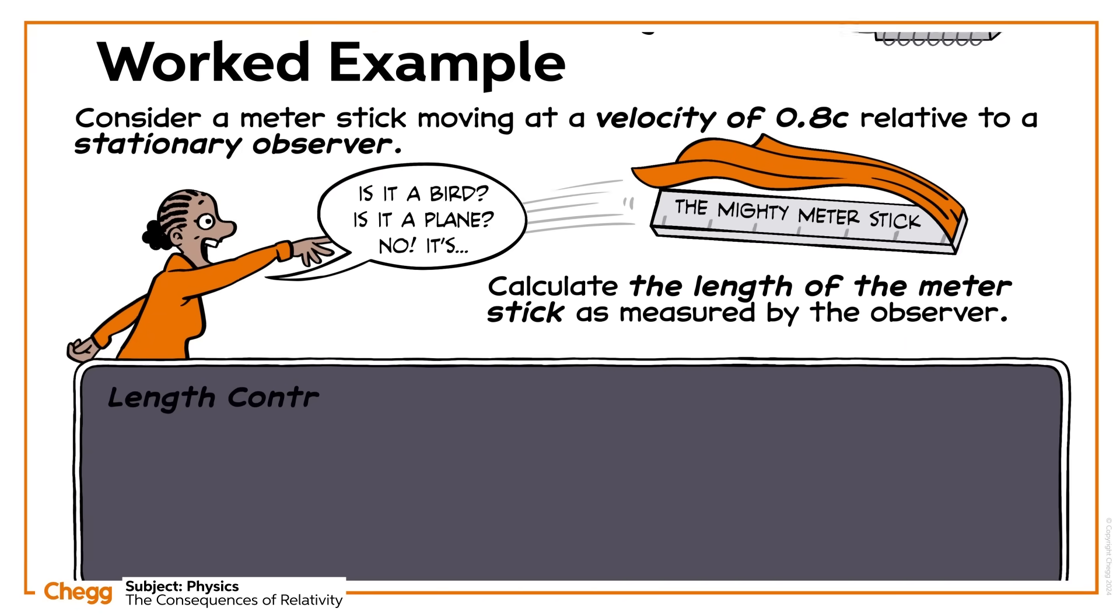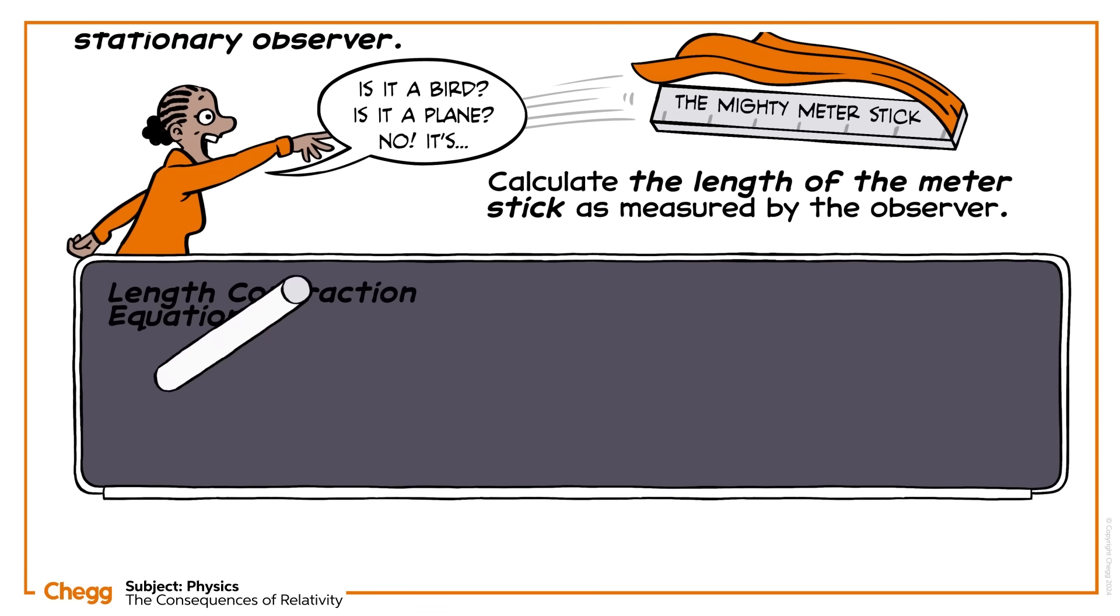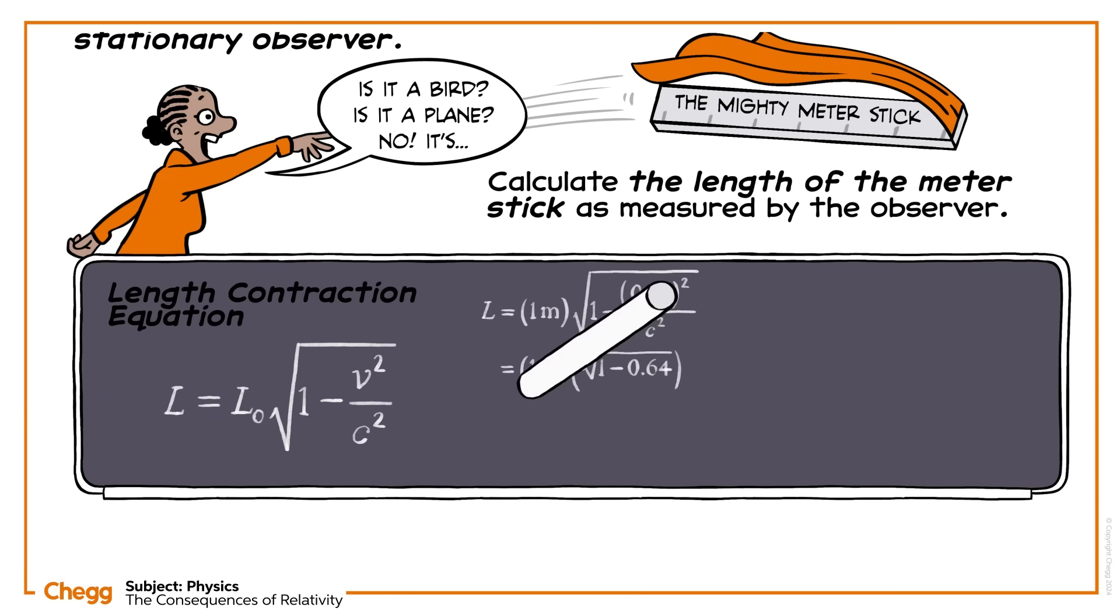We need the length contraction equation for this one. Factor in the length of the meter stick, the velocity of the stick, and the speed of light, and solve for L. The observer would measure the stick to be 0.6 meters long.